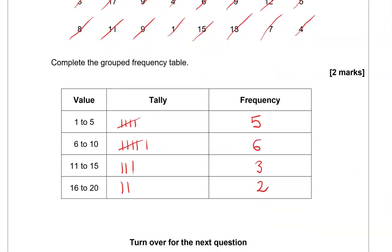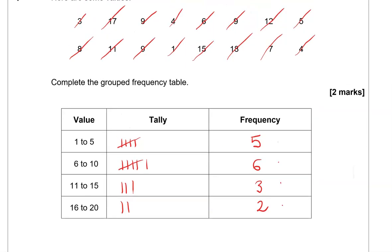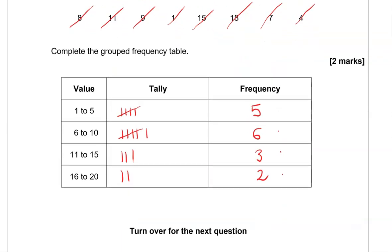Let's check. So we've got 5 and 6, that's 11, plus 3 is 14, plus 2 is 16 in total. Do we have 16 in total here? So 1, 2, 3, 4, 5, 6, 7, 8 times 2, that is 16. So we must have done this correctly.